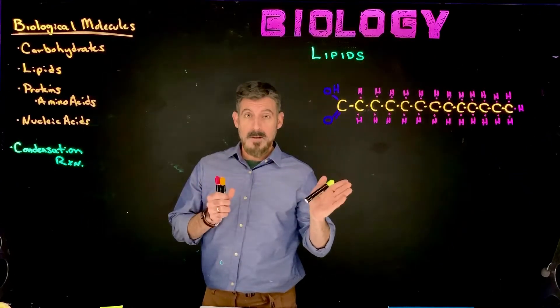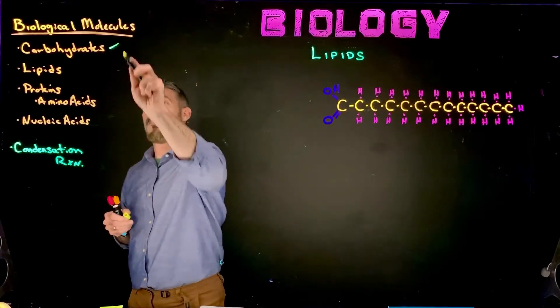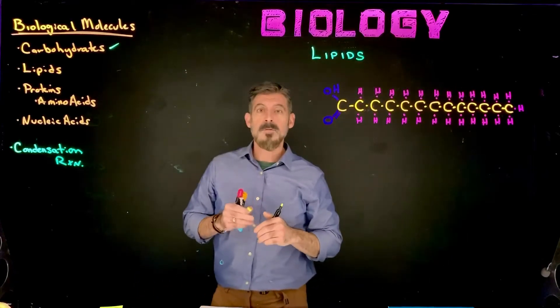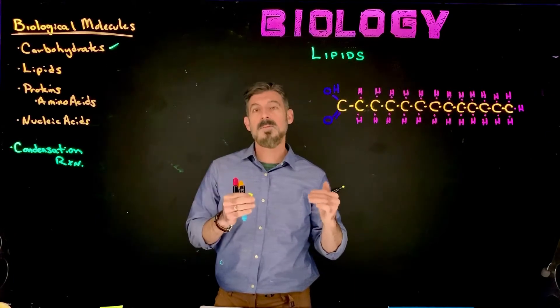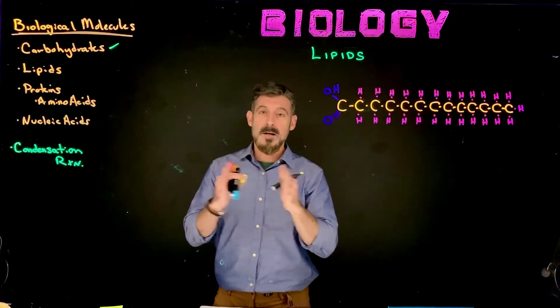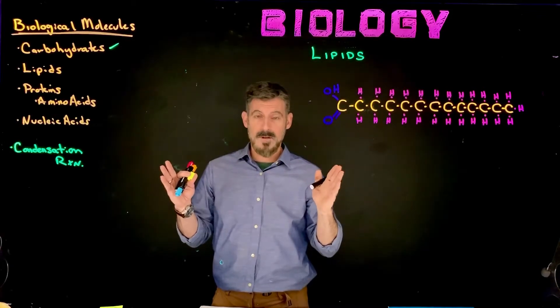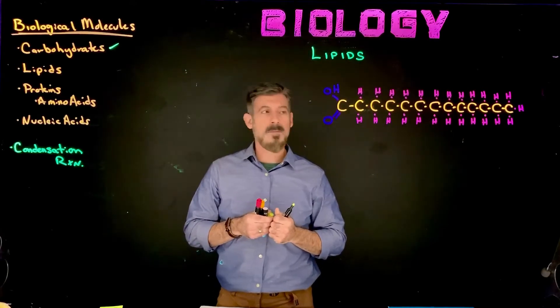We looked at carbohydrates as the first group of biological molecules. You should be able to sketch out a simple sugar structure in linear form, explain how it would form a ring structure, and see how ring structures form complex carbohydrates, explaining some differences between those types.